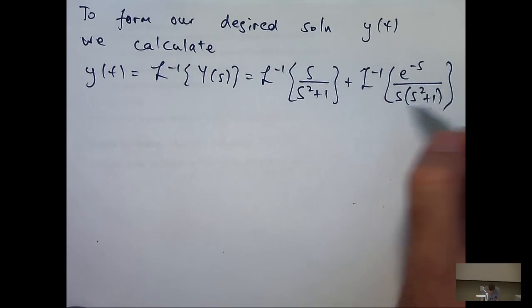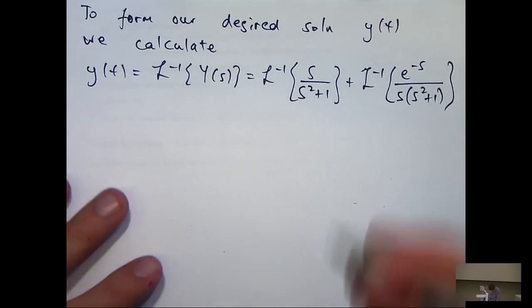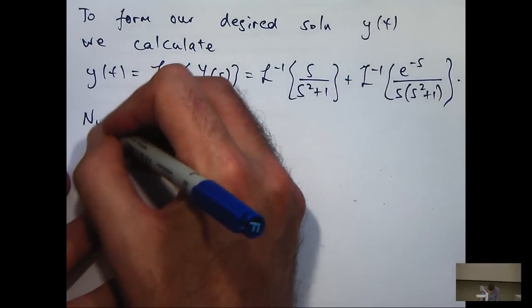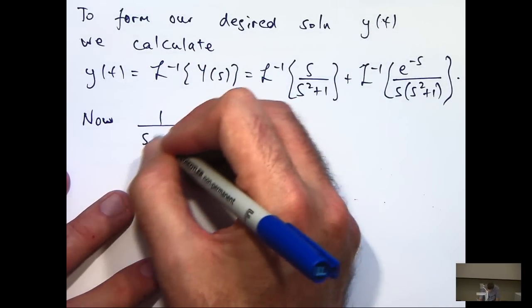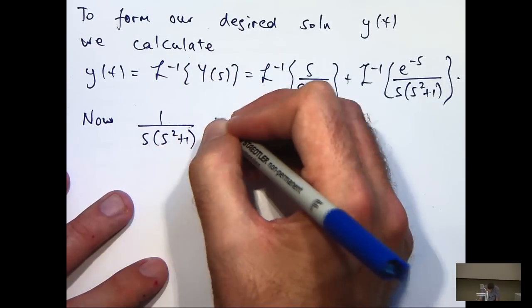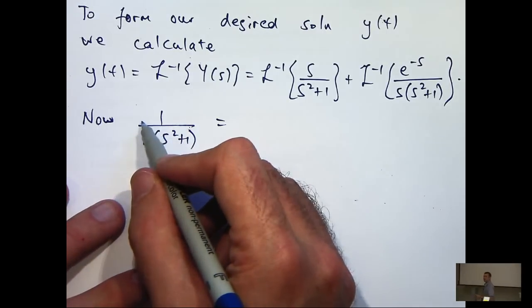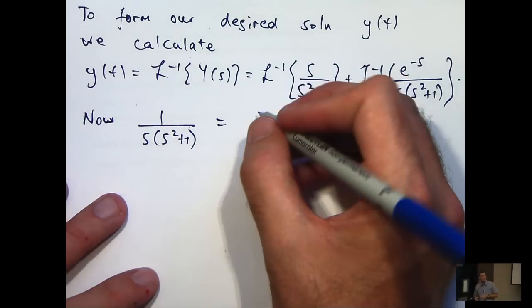So what we're going to have to do is break this up a bit. Now it's quite easy, you could use partial fractions, but it's not necessary. What I'm going to do is add s squared and take away s squared from the top.